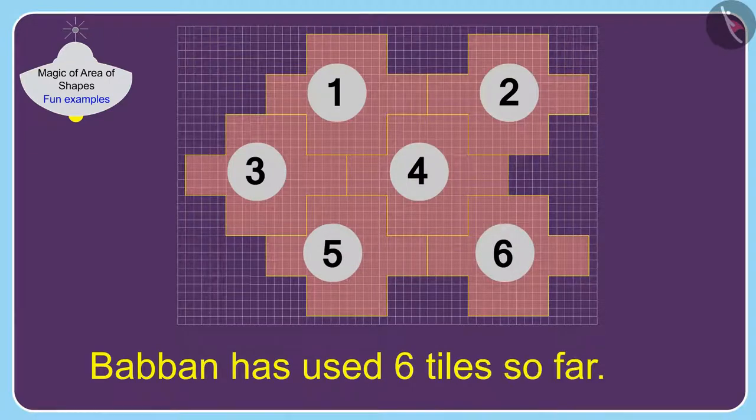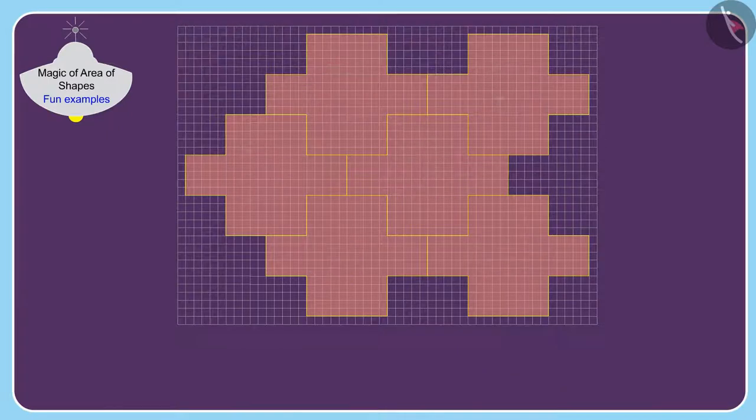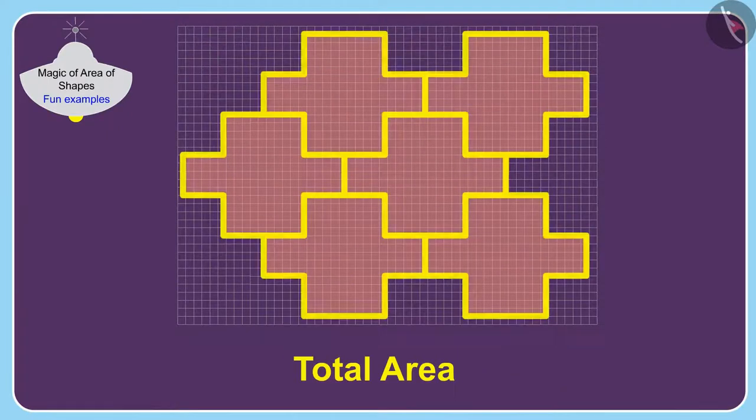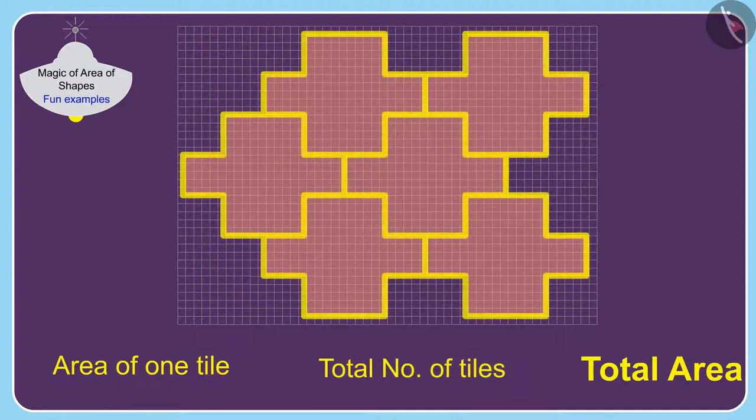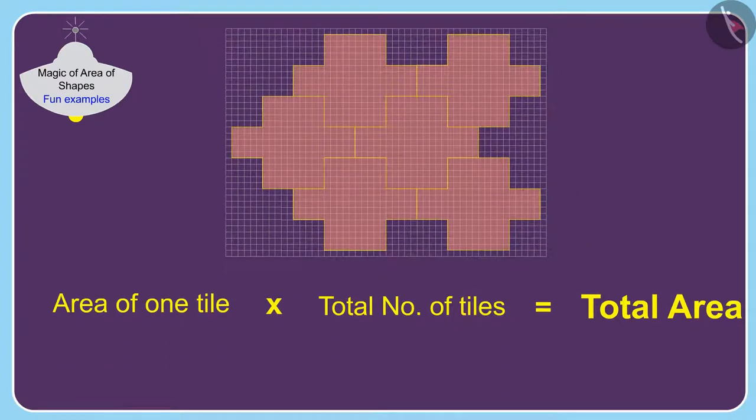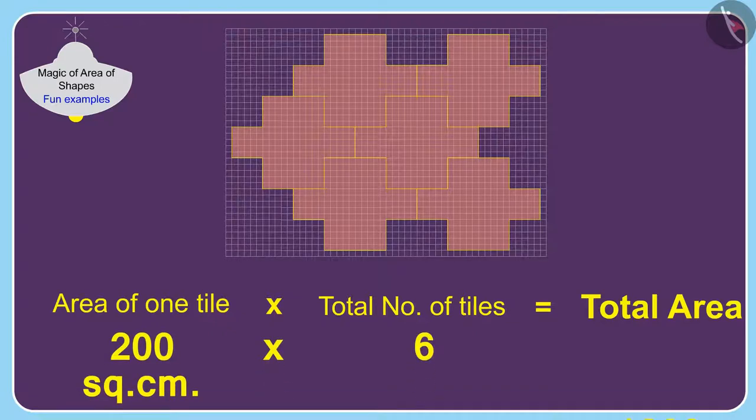Now it is very easy to find the total area. We only have to multiply the area of one tile by the number of total tiles. In this way, the total area covered by the tiles will be 200 multiplied by six, 1200 square centimeters.